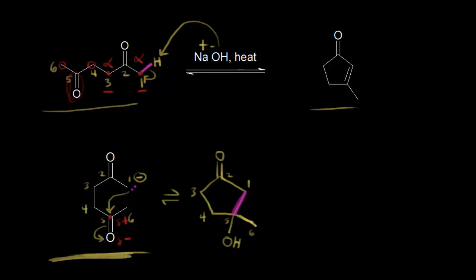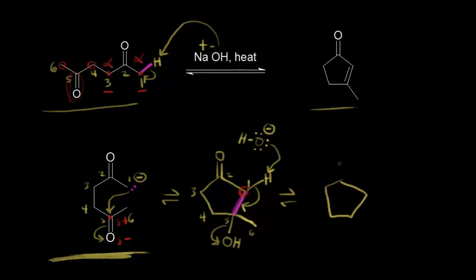This is our alpha carbon right here, so we could deprotonate that. Drawing an alpha proton here, we could think about hydroxide coming along, functioning as a base, and taking that proton. The hydroxide takes this proton, these electrons move in here to form your double bond, and you have hydroxide as your leaving group. When we draw the product, we have our ring, our carbonyl right here, a double bond now, and then our methyl group — that's obviously our product.